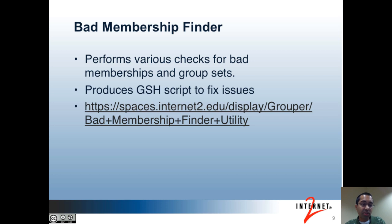The bad membership finder utility is used to find bad memberships in group sets. For example, it's possible for composite groups to end up having incorrect memberships if there are multiple changes happening with groups that make up the composite at about the same time. Also, it's possible for effective group sets to get out of sync if multiple related changes are happening together. These types of issues are fairly uncommon, but since they're possible, we have a utility to fix them. The utility will run out of the Grouper report by default, or you can run it manually using GSH. The utility itself does not make any changes to your Grouper registry, but it produces a GSH script which should fix your instance. I've included the wiki page for more information.